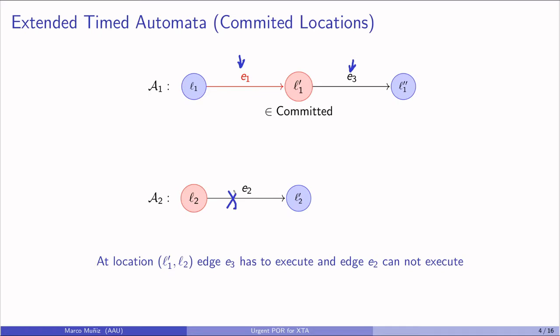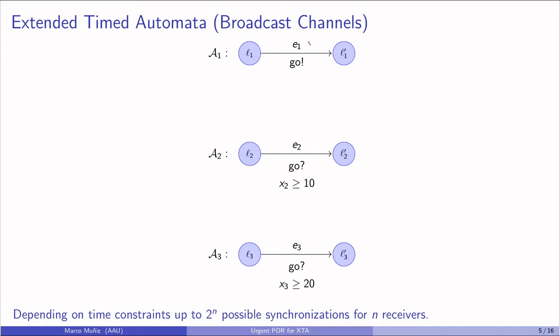There are broadcast channels. Here we have a sender and two receivers. Now we are going to be doing some static analysis, and we have partial information, which means that there are 2 to the power of n possible synchronizations for n receivers. This could be, for example, when E1 fires and the others are not ready, or E1 and E3 fire, or when all of them can synchronize.